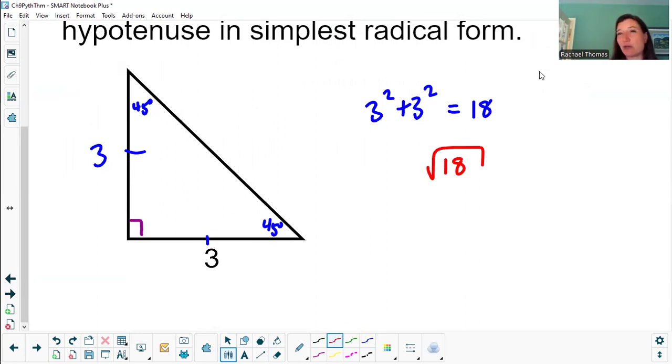I said simplest radical form, so that means I am not going to type this in my calculator and get a decimal. Instead, I'm going to simplify it by calling 18 nine times 2. The square root of 9 is 3, and the square root of 2 I just have to call root 2.